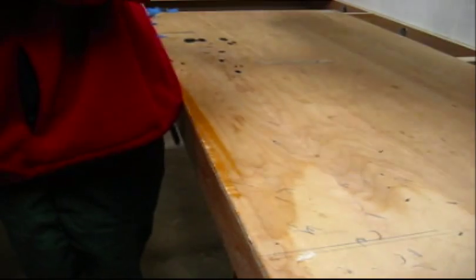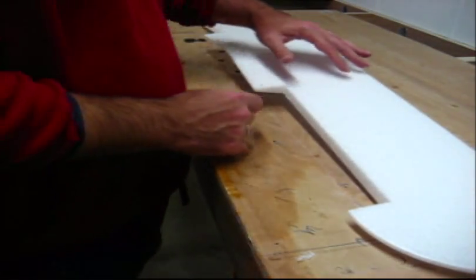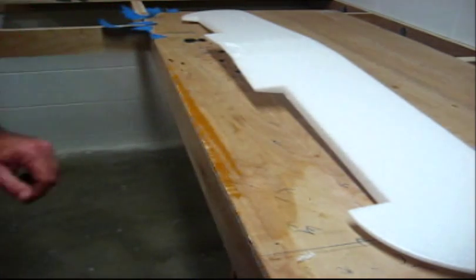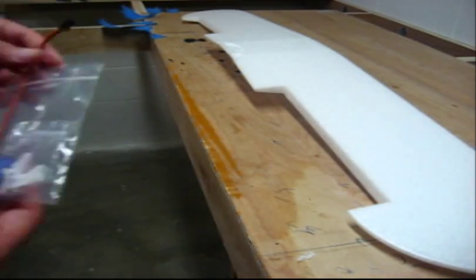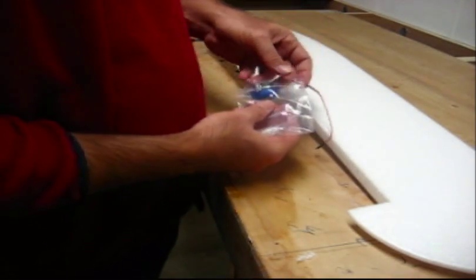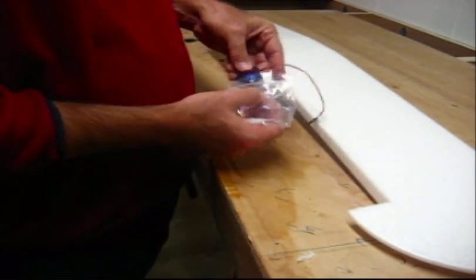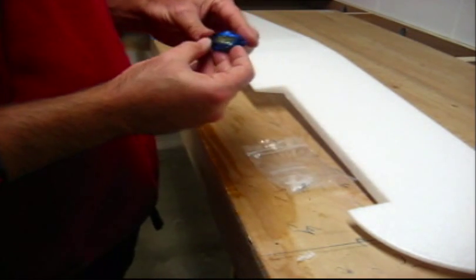Next thing you want to do, flip the wing over. And we're going to measure for servos. And I use, I go online and I order my servos from a place called Hobby City. These are nine ounce servos, Hextronics.